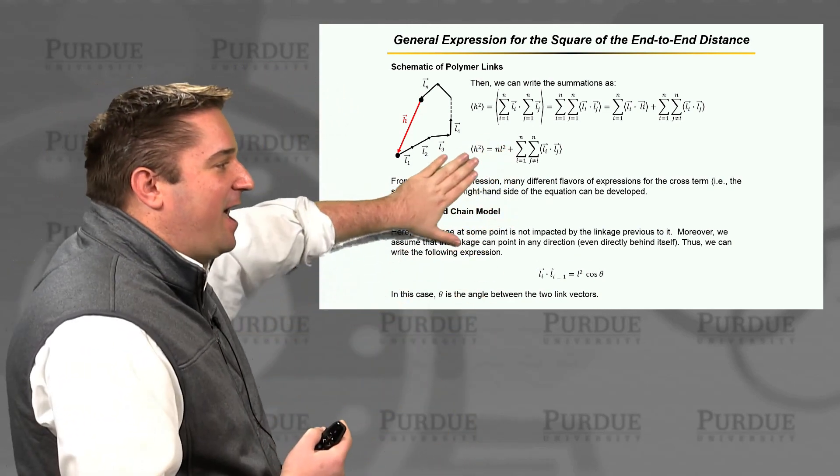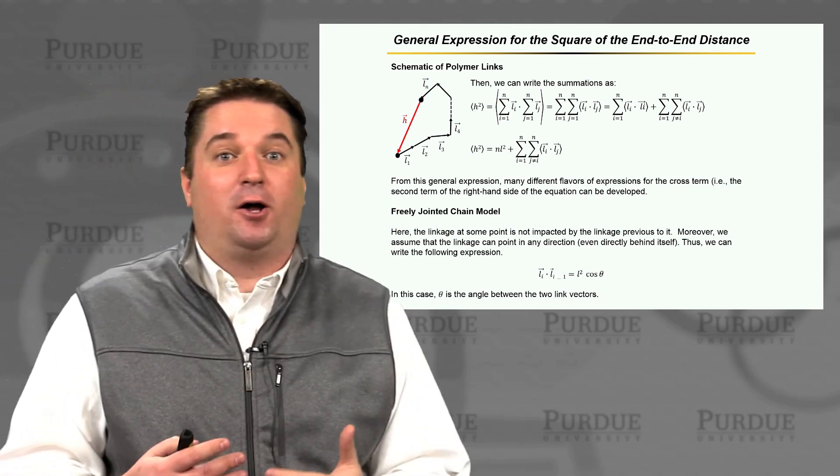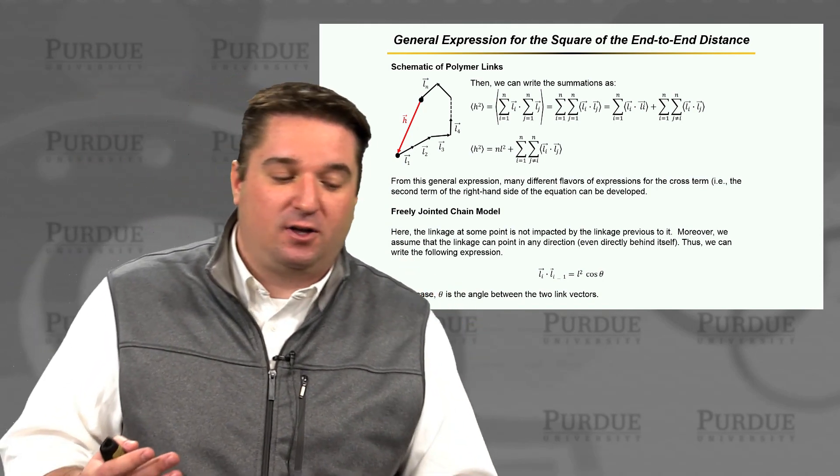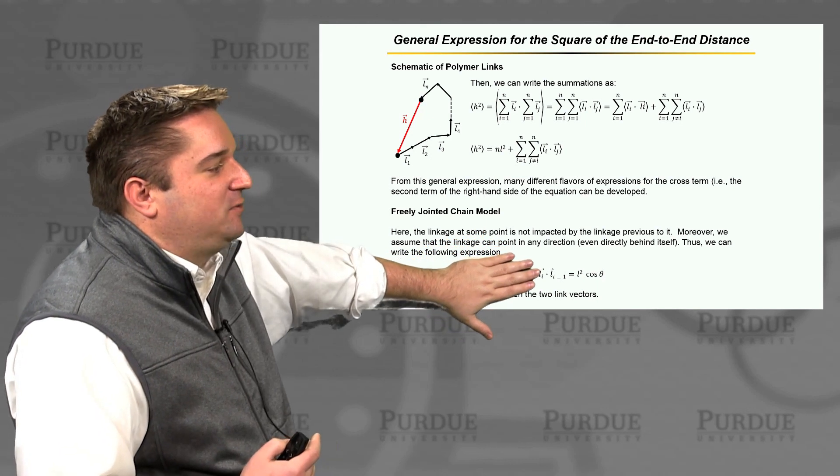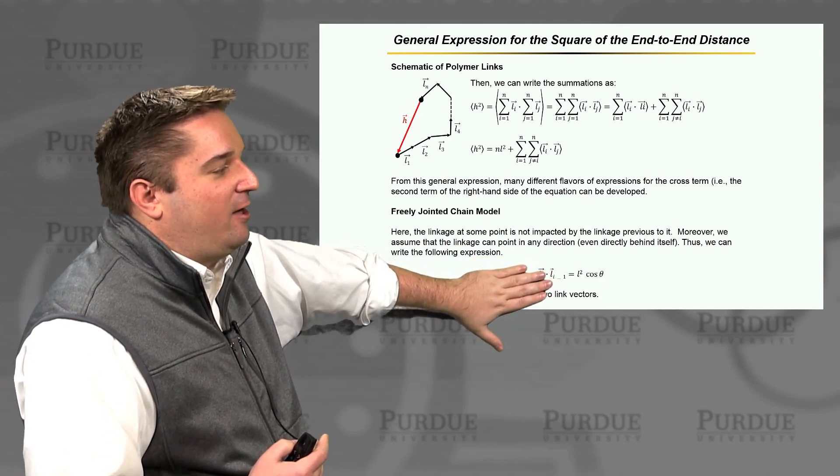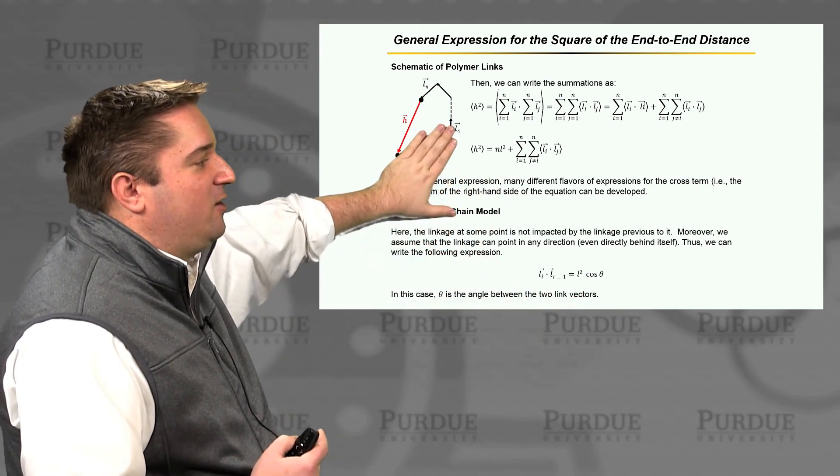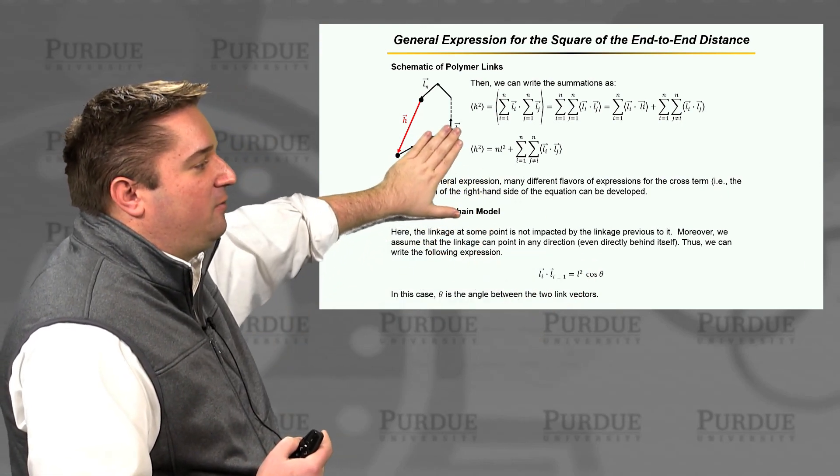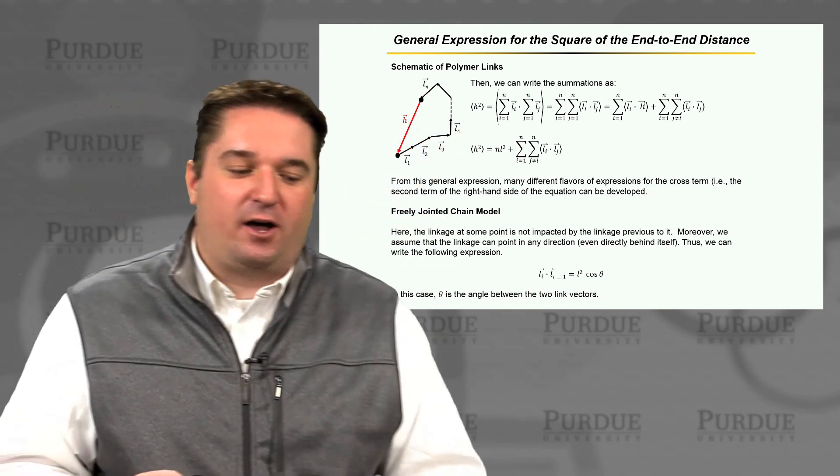Even L2 could fold all the way back and be on the exact same point as L1. That's possible in this model. And that tells us that the dot product of Li dotted with the chain before it, Li minus 1, is just L squared times the cosine of theta, where theta is the angle between, let's say, L3 and L4. This is theta right here, that angle between the two products.